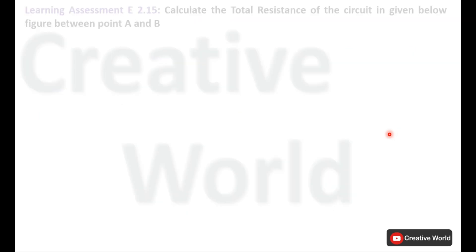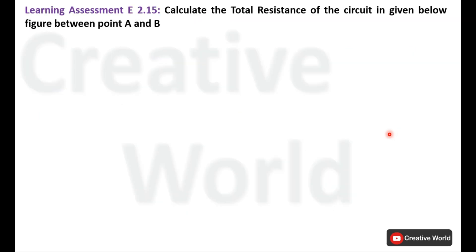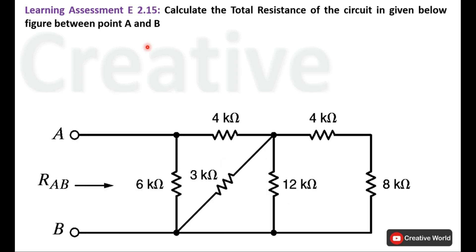Now we will move towards the problem — Learning Assessment E2.15. We have to calculate the total resistance of the circuit in the given figure between points A and B. So without wasting time, let's proceed towards the solution.